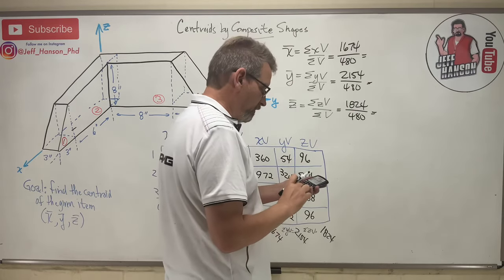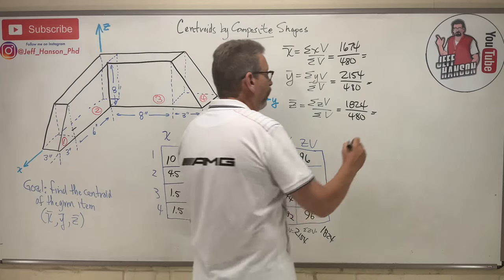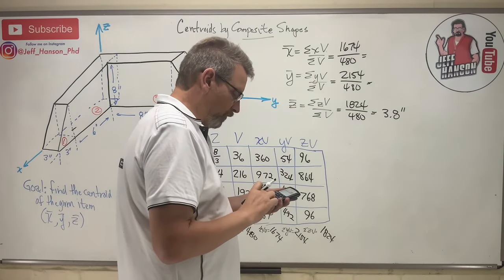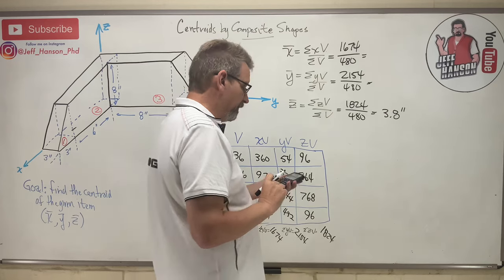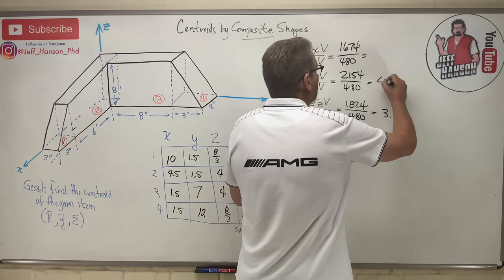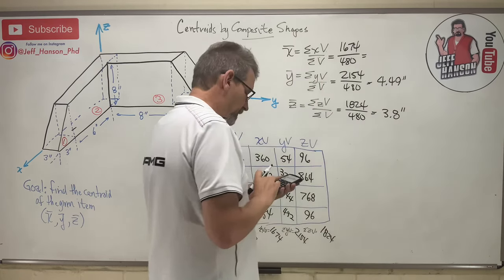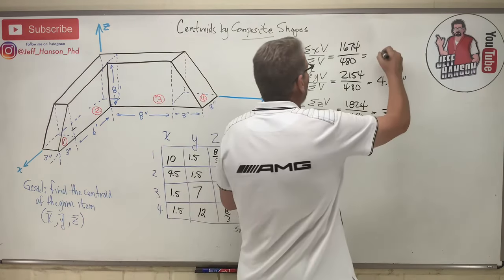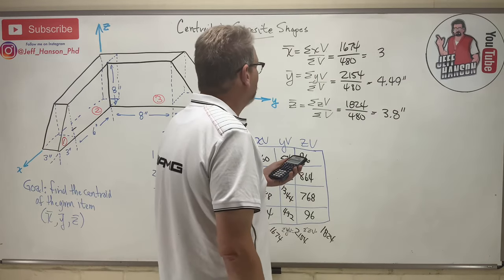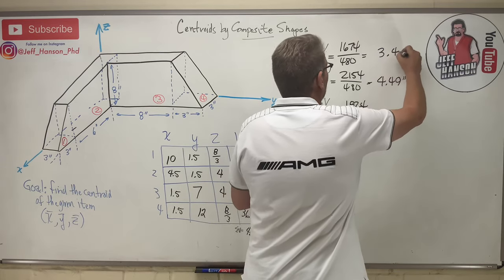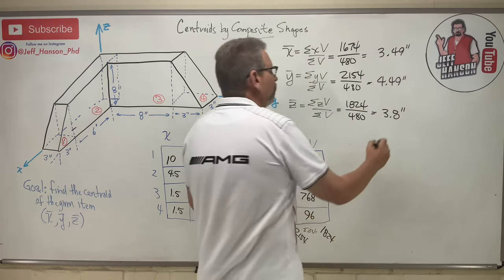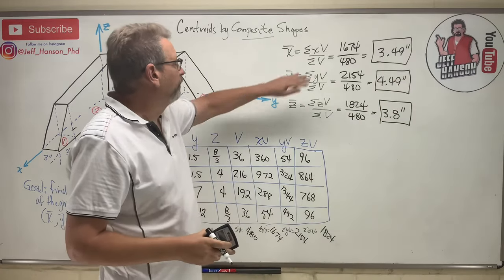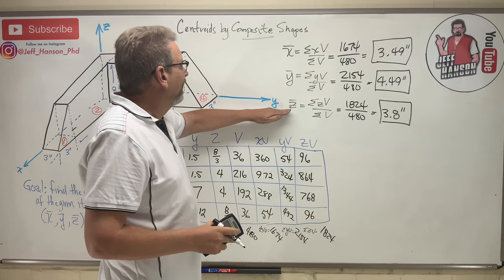And let's see what we got. We got 1824 divided by 480 is 3.8. And these are going to be in inches, aren't they? There's Z bar. 2154 divided by 480 is 4.49. And then 1674 divided by 480. Finally, 3.49 again. There's no way. 1674. Oh, that was 3.49. Sorry. I was like, that's the same as the other one and it's different numbers. No, it's not. There you go. So there is the location of the centroid. X bar is 3.49. Y bar 4.49 and then Z bar 3.8.